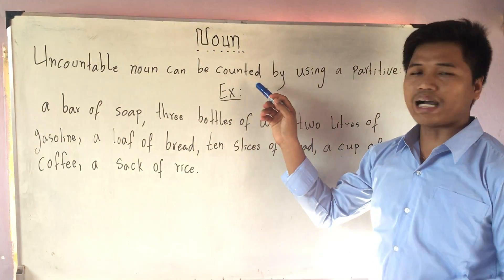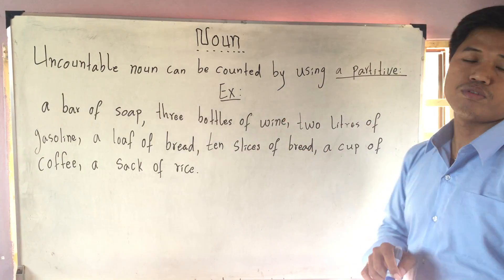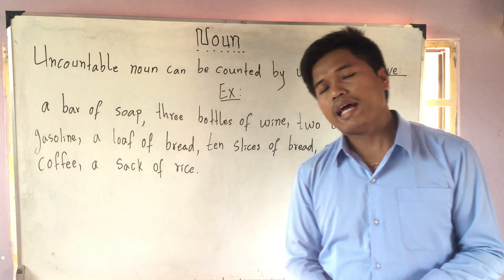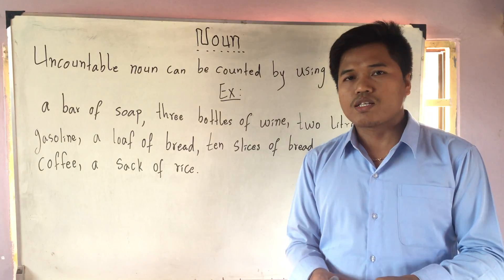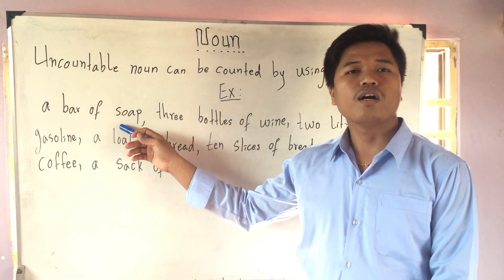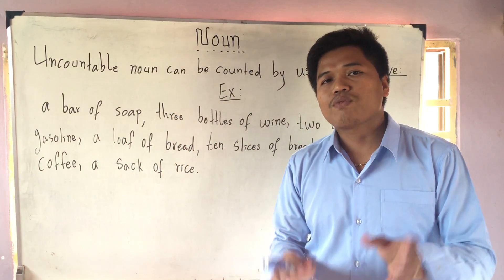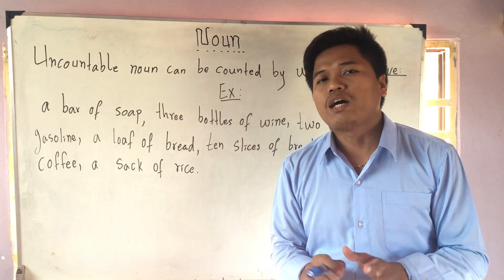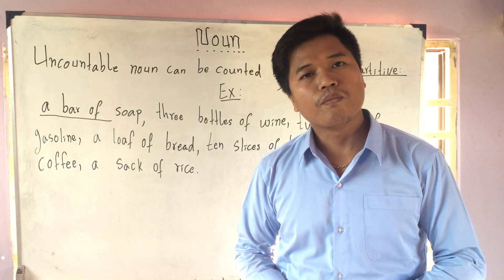Uncountable nouns can be counted by using a partitive. A partitive is a word that we use to express the quantities of nouns that we cannot count directly.